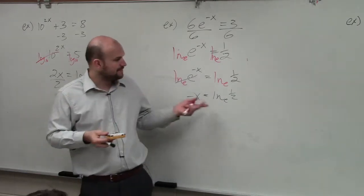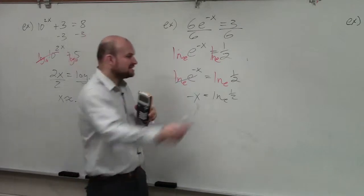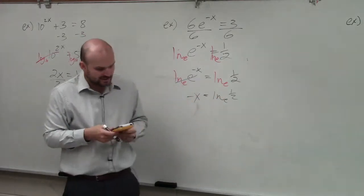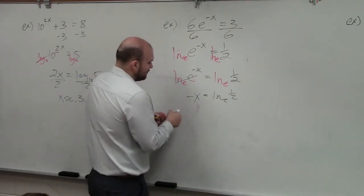So, when I'm typing this in, I look and I see, oh, ln, there's no base there. Because base is already e. So, I just take the ln of 1 half, and then I have to divide that by a negative 1.